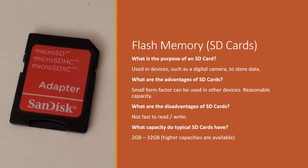Our next flash memory device is an SD card. These are small storage devices which act as storage for phones, cameras, tablets, and more. Because of their small size, they can be used in a range of devices and have a reasonable capacity for storing data. They are strong and durable, meaning they can be knocked around without breaking. While they are not the fastest to read from and write to, they are suitable for their purpose. Typical capacities for SD cards are between 2GB and 32GB, although higher capacities are available.